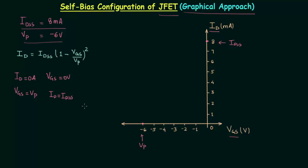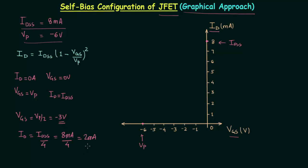We have two points and need one more to plot the transfer curve. Setting VGS equal to VP/2, that is minus 6 divided by 2, gives VGS = -3V. Substituting into Shockley's equation gives ID = IDSS/4 = 8mA/4 = 2mA. So the third point has x-coordinate -3V and y-coordinate 2mA. I will extend the 2mA line and the -3V line, and their intersection is the third point.